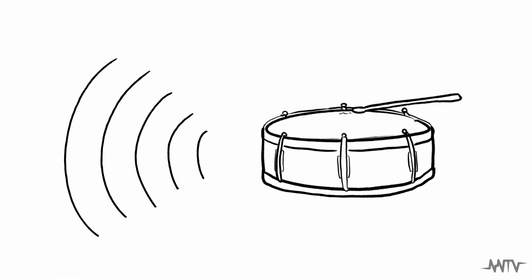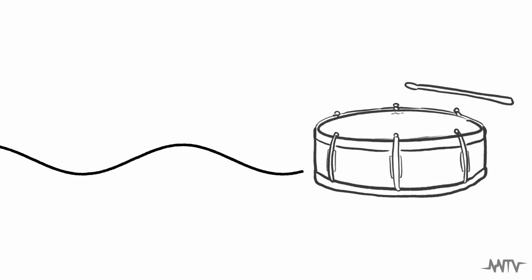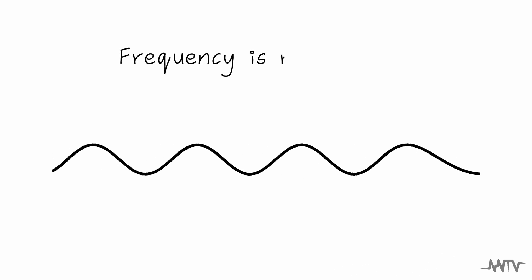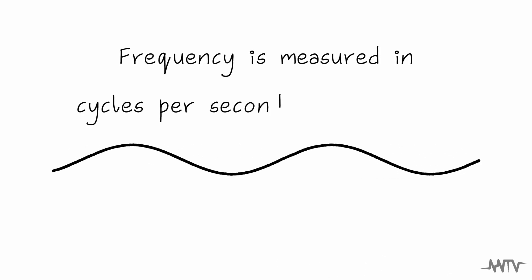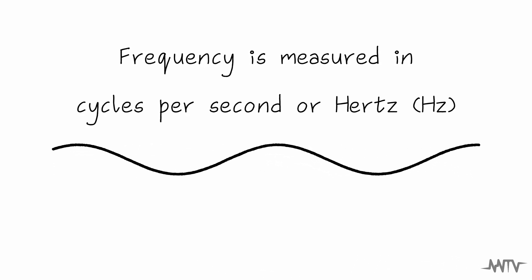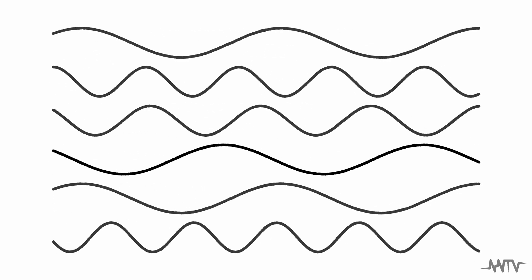As we've discussed in our intro to signal flow video, sound travels through the air as waves. The speed of a sound wave is referred to as its frequency and is expressed as an amount of cycles per second, measured in a unit called hertz.